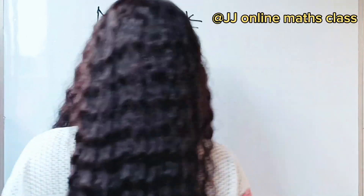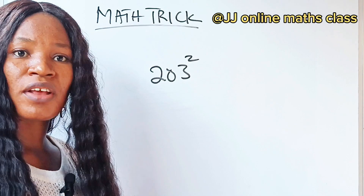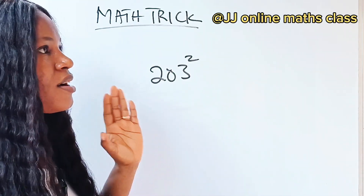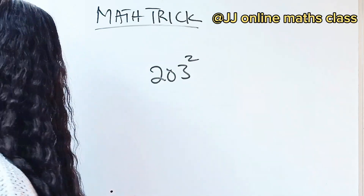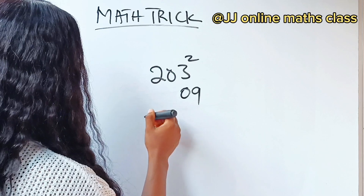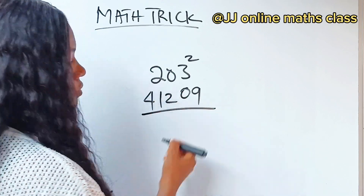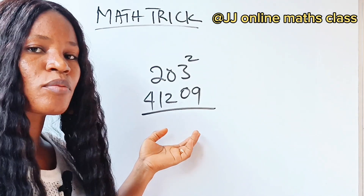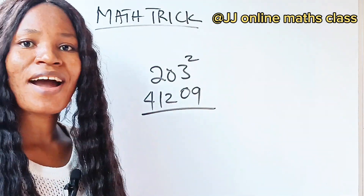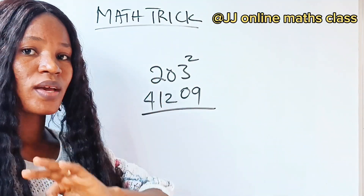What if you are asked to solve 203 squared and you're not given a calculator and you have just five seconds to do that? Let me give you the solution and then tell you how I got that. The solution to this is 41,209, and I'm sure this didn't take me up to five seconds to get. Welcome back to my channel — I'm going to teach you how to do this in three different ways.